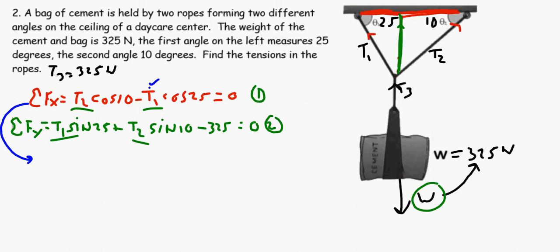The easiest one for me to utilize at this point is the Fx equation, the sum of the forces in the x. I'm going to bring this down here and I'm going to solve for T1. I'm going to add the T1 cosine 25 term to the other side.